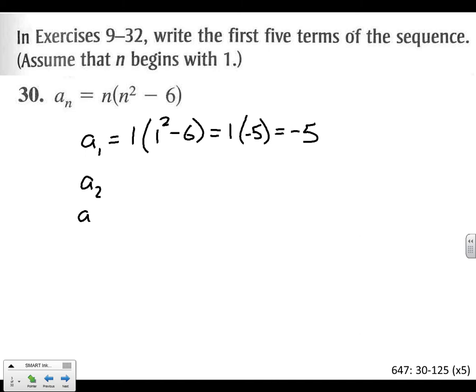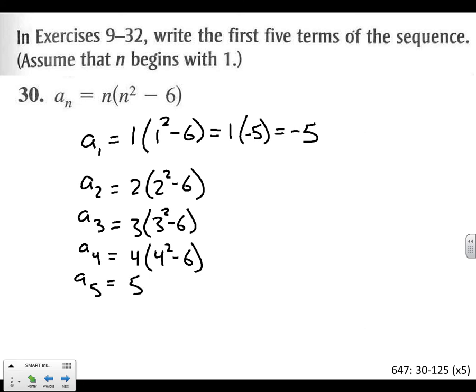And so we'll do the same thing for plugging in 2, 3, 4, and 5. So we'll plug in 2. We'll plug in 3. We'll plug in 4, and we'll plug in 5, 5 squared minus 6. So let's see what we've got here. 2 times 4 minus 6 is negative 2, so negative 4.